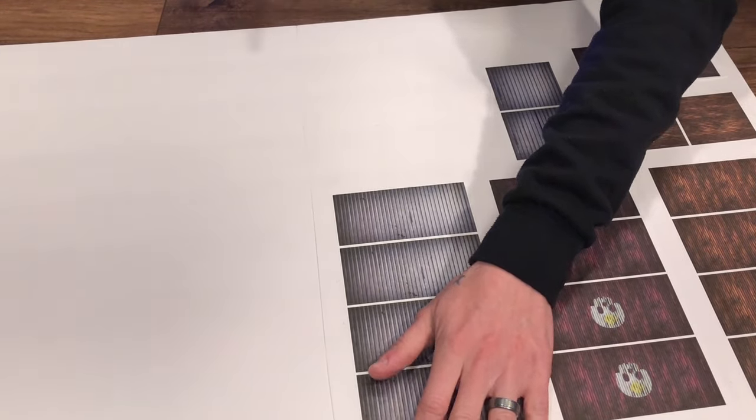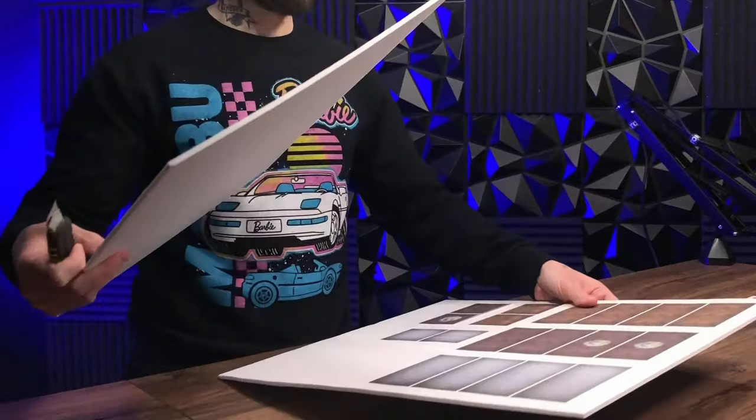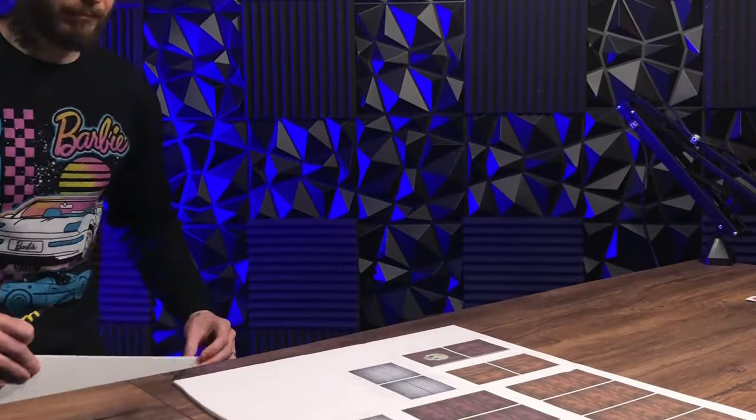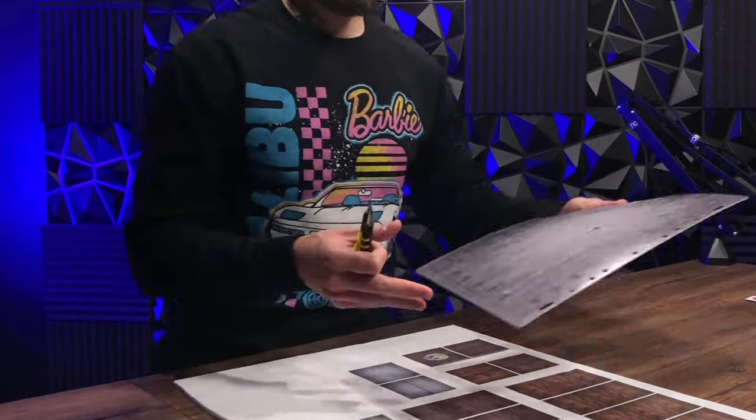Once those are all in place I'm going to cut off the excess board and then I'm going to pull out this protective mat to protect the table and start cutting out these shapes.